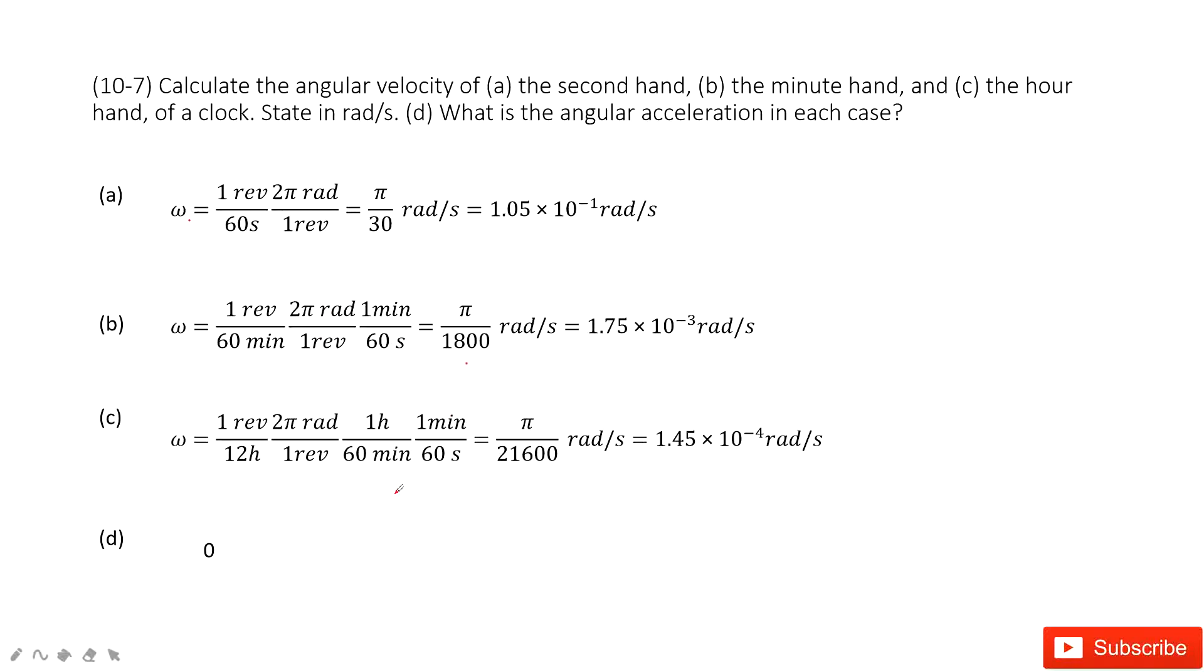The next one is the hour hand. For the hour hand, one revolution is 12 hours. Do you agree? Yes. And then one revolution is 2π radians. You can convert one hour to seconds and then get the final answer.